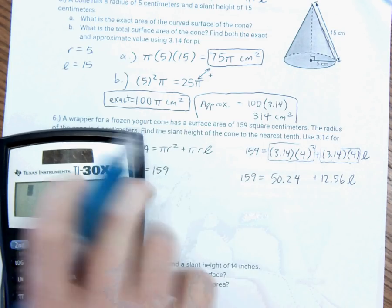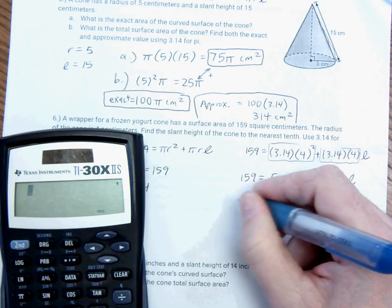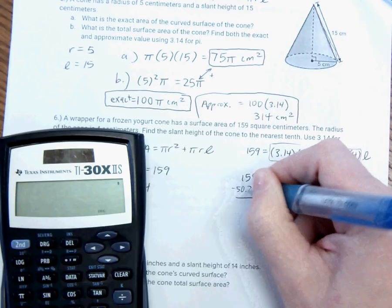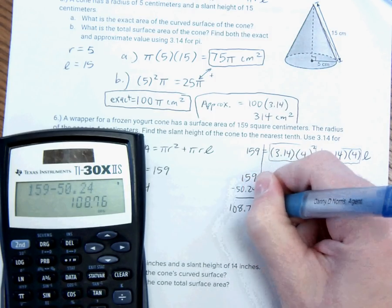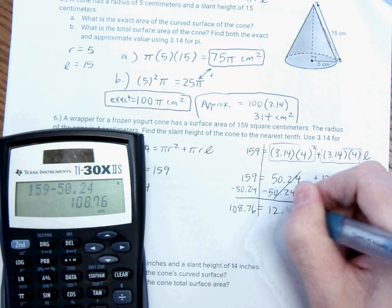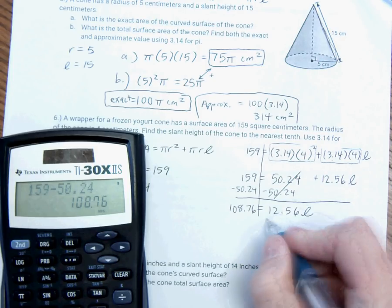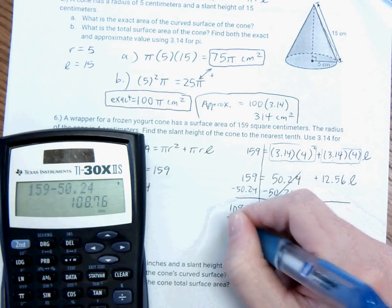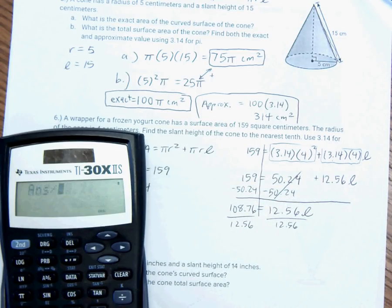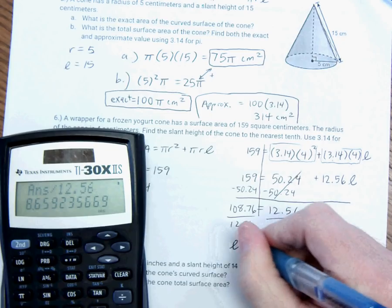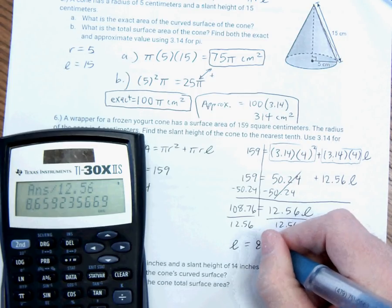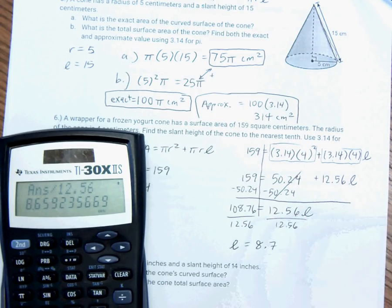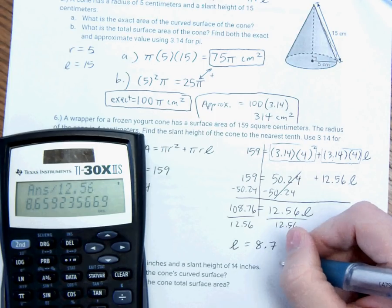So, now I can solve this equation. Start off by subtracting 50.24 from both sides. So, this cancels out. 159 minus 50.24 is 108.76 is equal to 12.56 L. Step two, divide by the 12.56. So, divide by 12.56, and I get my slant height is equal to 8.7 centimeters.